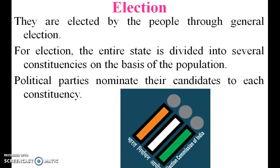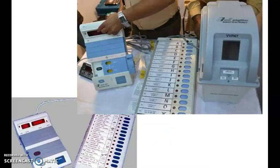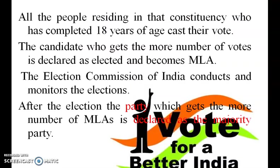They are elected by the people through general elections. For the election, the entire state is divided into several constituencies on the basis of population. The political parties nominate their candidates to each constituency. This is our Indian Election Commission. All people residing in that particular constituency who have completed 18 years of age are eligible to vote.